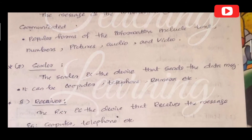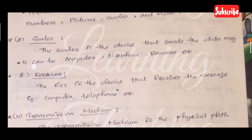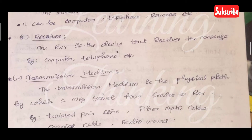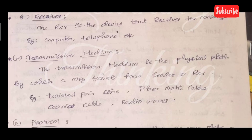The second component is the sender — the device that sends the data message; it can be a computer, telephone, camera, etc. The third is the receiver — the device that receives the message, such as a computer or telephone. The fourth is the transmission medium — the physical path by which the message travels from sender to receiver, such as twisted pair cable, coaxial cable, or fiber optic cable used in cable TV.